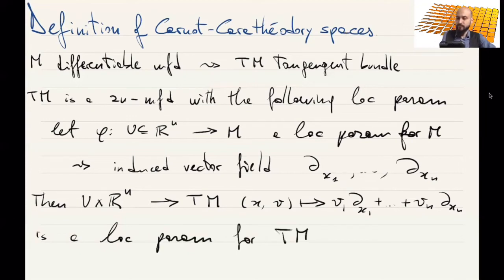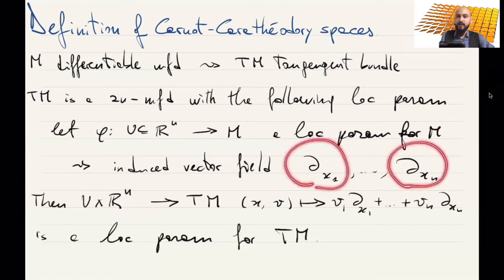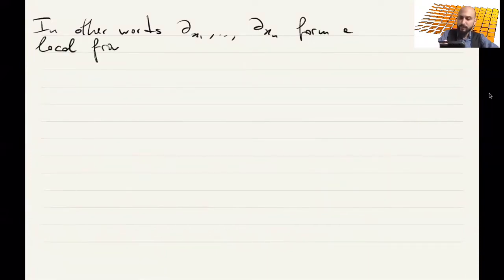What is it that we have done? We have constructed... we are seeing these vector fields as a basis of the tangent space at every point. In other words, dx1 ... dxn form a local frame for TM.